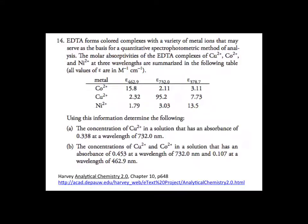For part A, we're going to find the concentration of copper ion in solution if we're given an absorbance of 0.338 at a wavelength of 732 nanometers. We're going to disregard the cobalt and nickel absorbances at that wavelength because they're fairly negligible. We're just looking for copper in solution and we can assume that most of the absorbance comes from that.